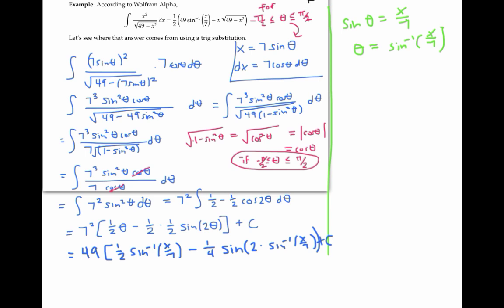We can rewrite sine of two theta as twice sine theta cosine theta. So let me ignore this line for now. And I'll rewrite the above line as 49 times one half theta minus one fourth times twice sine theta cosine theta, plus c.